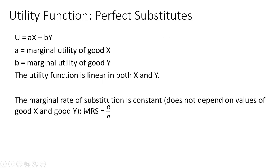The marginal rate of substitution is going to be constant for a perfect substitutes utility function. That is, it does not depend on the values of good x and good y. The marginal rate of substitution will just be a divided by b, which is the marginal utility of good x divided by the marginal utility of good y.